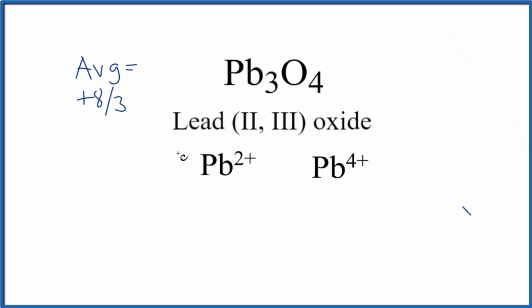The ratio is a 2 to 1 ratio, so we have two of these for every one of these. If we looked at the total charge, 2 times 2 plus, that's 4 plus, so 4 plus and 4 plus, that's 8 plus. And we have 2 plus 1, 3 atoms, so 8 plus over 3. That's where we get this average oxidation number here.